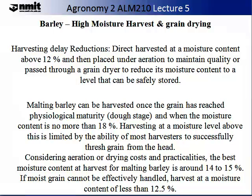To reduce harvesting delays, direct harvesting at a moisture content above 12% can be considered. But if this is undertaken, you will need to place the grain under aeration to maintain quality or pass it through a grain dryer to reduce its moisture content to a level that can be safely stored and allow for future germination. Malting barley can be harvested once the grain has reached physiological maturity and when the moisture content is no more than 18%. Harvesting at a moisture level above this is limited by the ability of most harvesters to successfully thresh grain from the head.